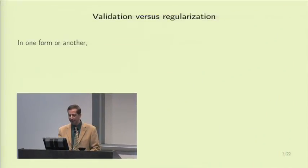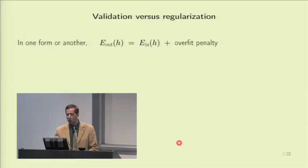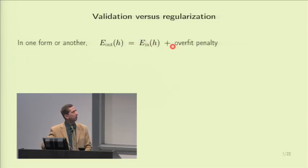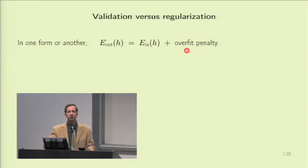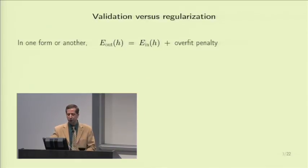Let me contrast validation with regularization regarding control over fitting. We have the well-known inequality where the out-of-sample error is at most the in-sample error plus some penalty — for model complexity, overfit complexity, etc. This tells us E-in is not exactly E-out, and the discrepancy has to do with the complexity of something. Regularization tried to estimate this penalty: it concocts a term capturing overfit complexity, and instead of minimizing E-in alone, minimizes E-in plus that term — the augmented error — hoping it is a better proxy for E-out.